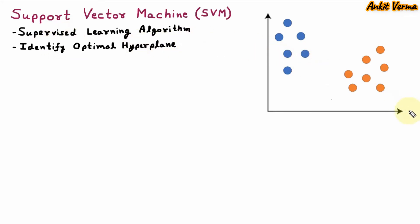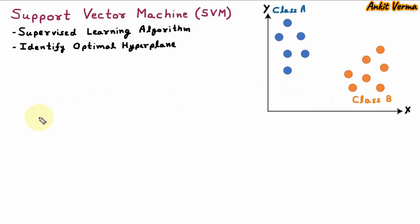Here in the diagram, we are having x-axes and y-axes. We have blue objects which belong to class A and orange objects which belong to class B. There are some key concepts in SVM. The first is hyperplane.